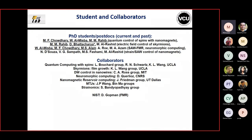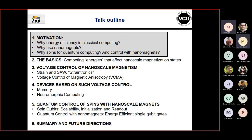This is an overview. I'd like to acknowledge the different graduate students who have been working over the years, from SAW strain control to FMR, neuromorphic computing, and the current work on skyrmions and quantum control. The talk outline: start with motivation for using spins for classical and quantum computing, then look at competing energies at the nanoscale, then memory and neuromorphic computing devices, and finally quantum control of spins with nanoscale magnets.